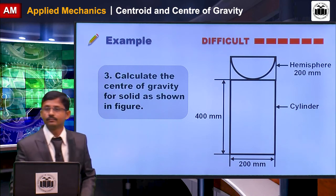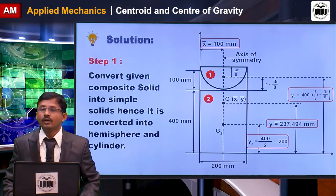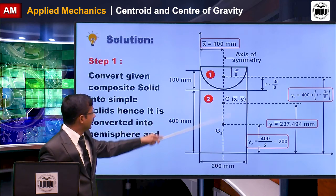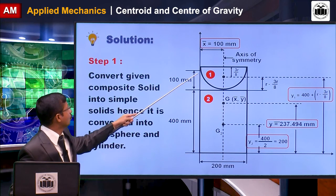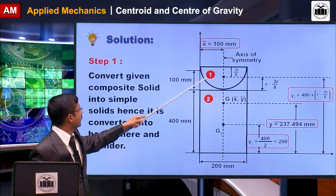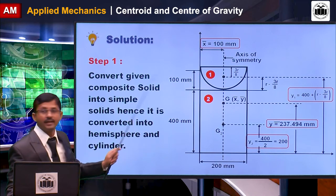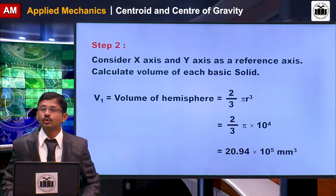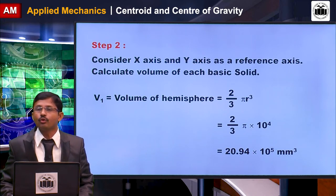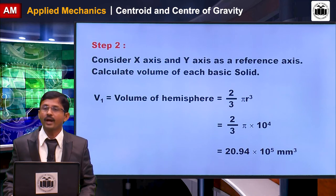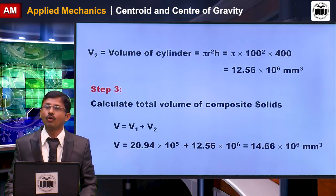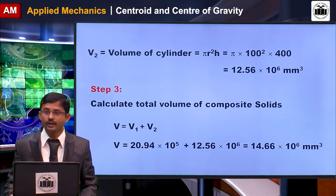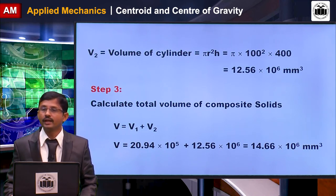The next problem has composite sections: part 1 is a hemisphere and part 2 is a cylinder, with the hemisphere kept inverted on top of the cylinder. Convert the figure into two parts. Calculate the volume of the hemisphere as (2/3)πr³ and the volume of the cylinder as πr²h. Then calculate the total volume as V1 + V2.